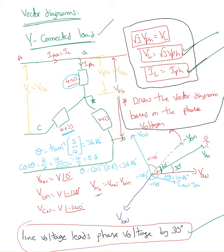For a Y-connected load or source, there are three important points to remember. First: VL equals square root of 3 times VPH — line voltage is always square root 3 times phase voltage. The phase voltage VPH equals VAN, which is between phase A and neutral, so it is smaller than the line value VAB. The second important point: line current equals phase current in a Y-connected load.